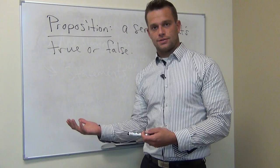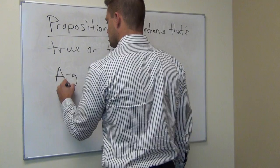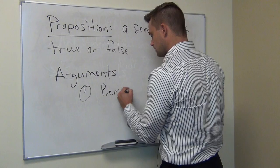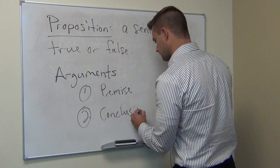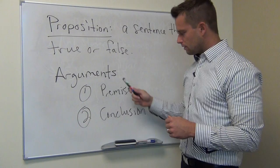It would be impossible to figure out whether an argument is true or false overall if we were unable to determine the truth or falsity of its component parts. Arguments must contain propositions, and arguments contain two types of propositions: one is a premise, and the other is the conclusion. Arguments are made of propositions or statements — sentences that are true or false.